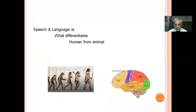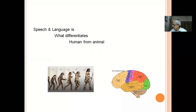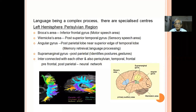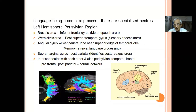The ability to speak and have a language center is what distinguishes humans from the rest of the animals. Language is a very complex process, and the most important thing to realize is that the language network is located in the left hemisphere — the left cerebral hemisphere — in the perisylvian region.